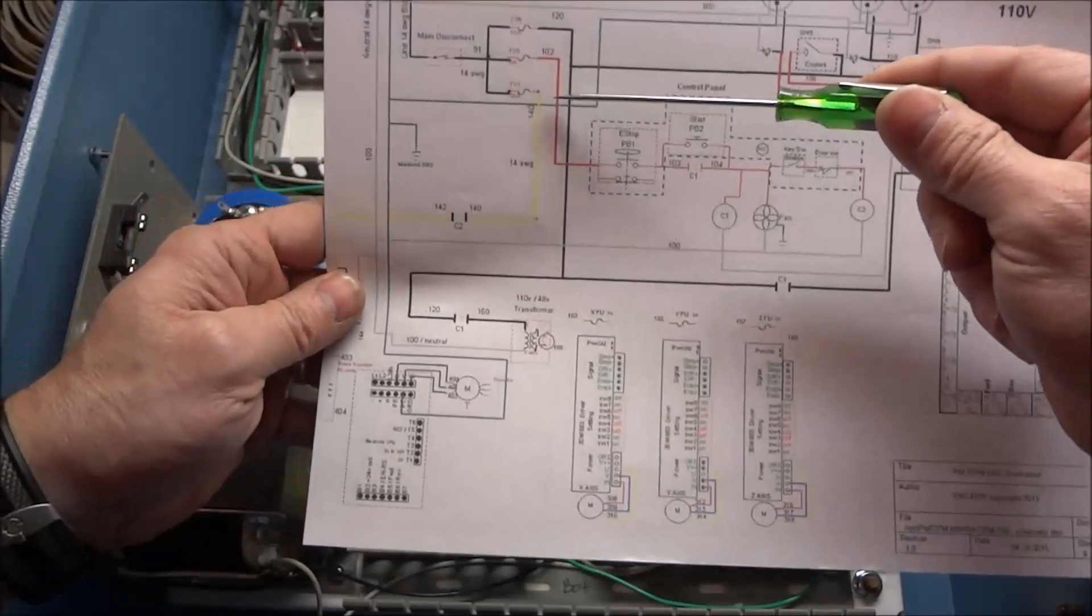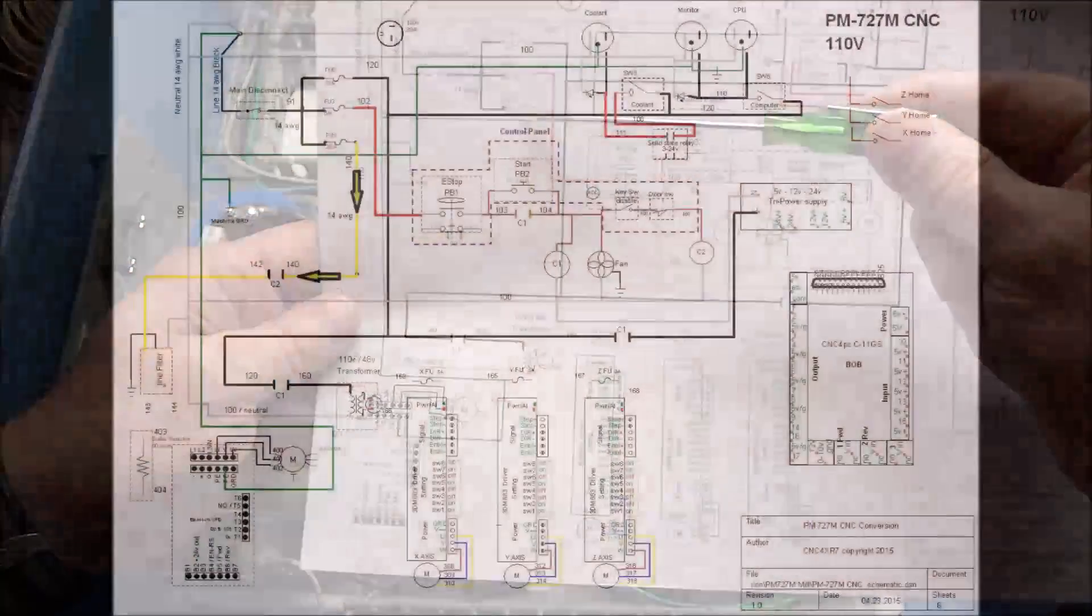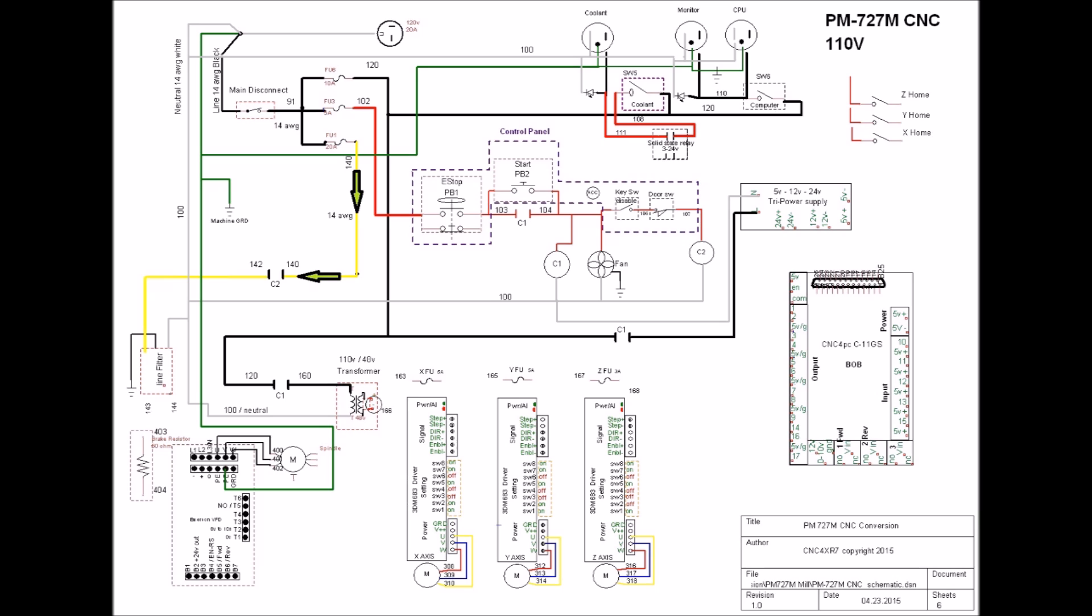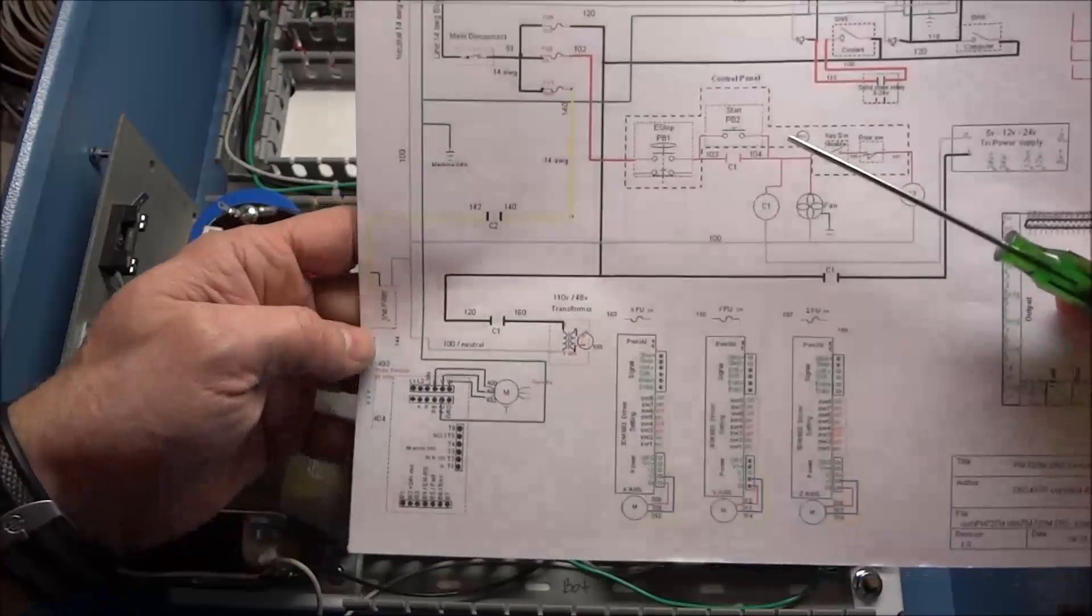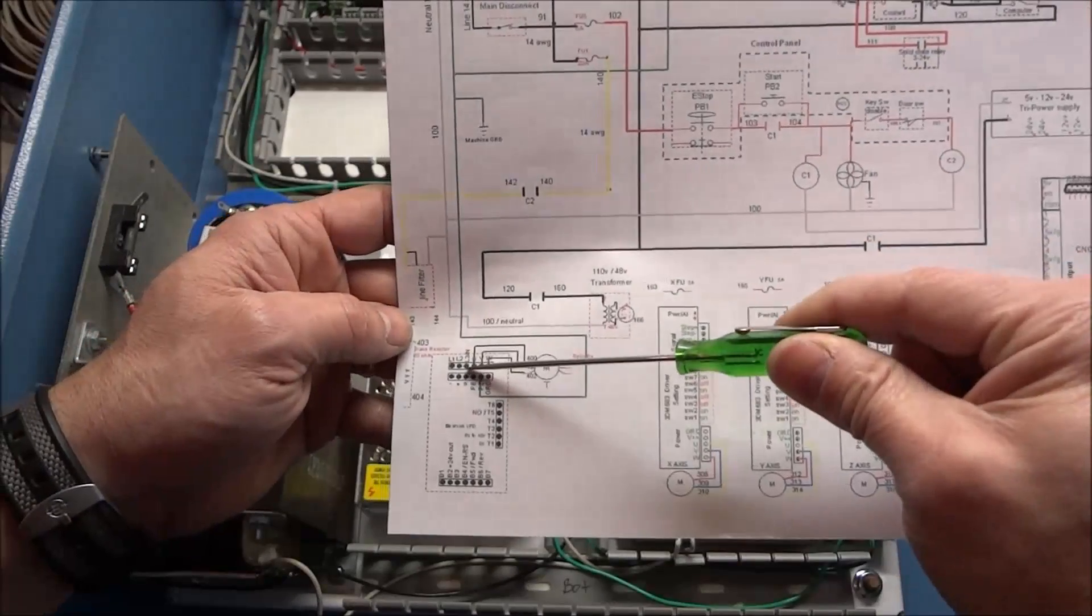We can now start working on fuse 1 and we want to bring power to contactor 2, a normally open set of contacts. This will be wire number 140 and this will supply power to our line filter and to our VFD.